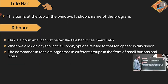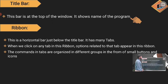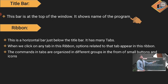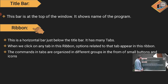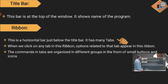The Title Bar is at the top of the window and shows the name of the program. The Ribbon is a horizontal bar just below the Title Bar. It has many tabs, and when you click on any tab, options related to that tab appear in the ribbon.